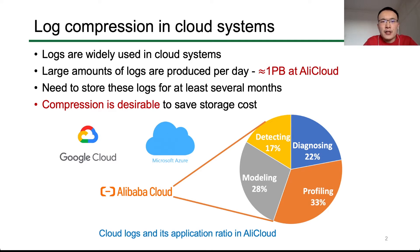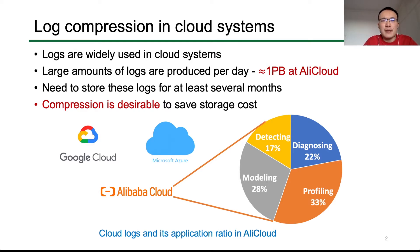We need to store these logs for a long time for multiple reasons. First, since errors will be detected much later than they were logged, we need to investigate past logs to identify the root cause. Second, to comply with the auditing requirements of local logs, AliCloud needs to store logs for six months, namely to store 180 petabytes. As a result, to save storage costs, compression becomes desirable.